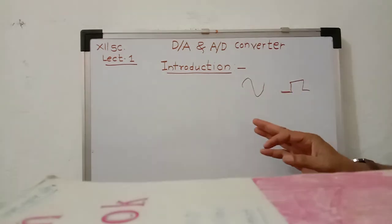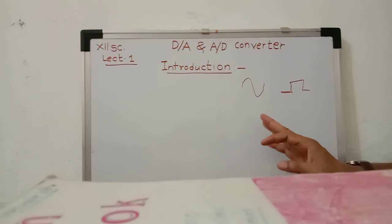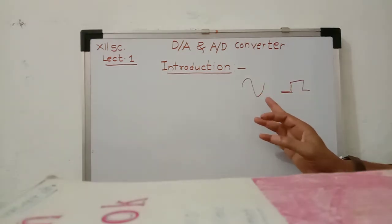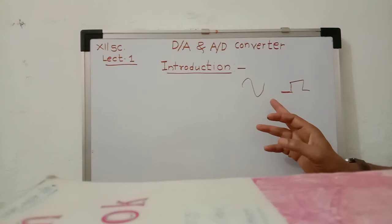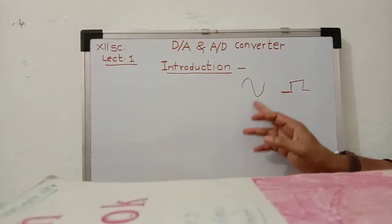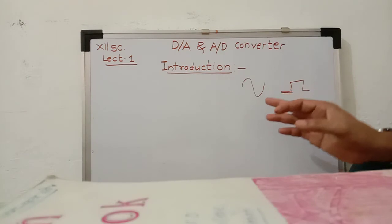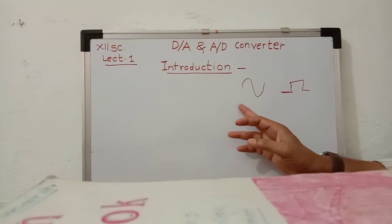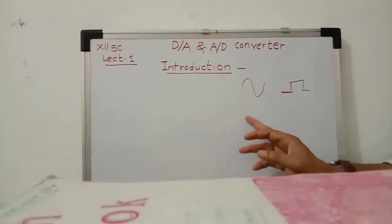There are some examples of Digital to Analog and Analog to Digital Converters. For example, in a digital voltmeter, an Analog to Digital Converter is used to convert analog voltage into its equivalent digital signal. In a digital communication system, messages are transmitted in analog form; therefore, at the transmitting end an Analog to Digital Converter is used, and at the receiving end a Digital to Analog Converter is used.